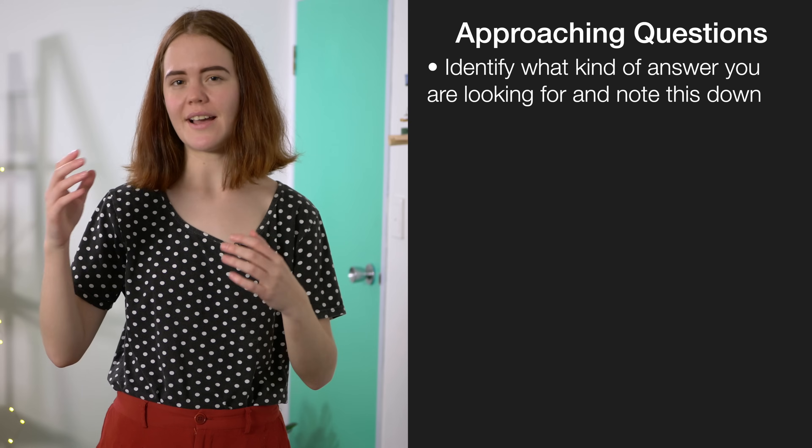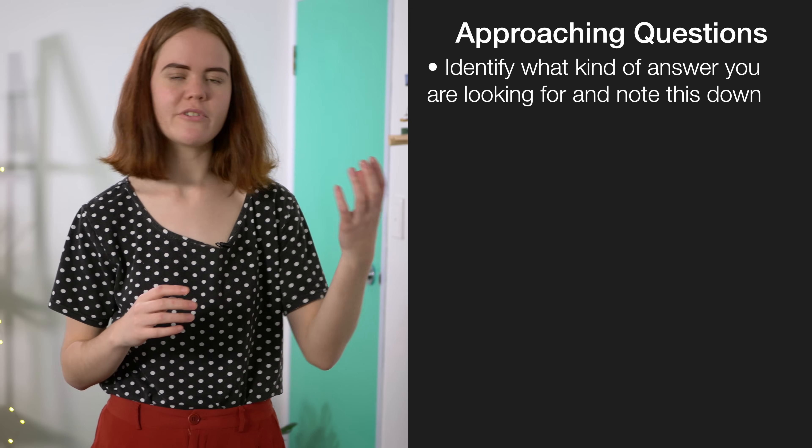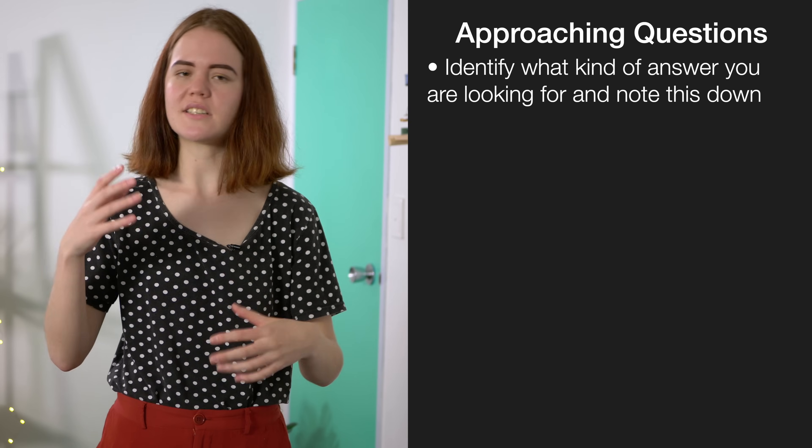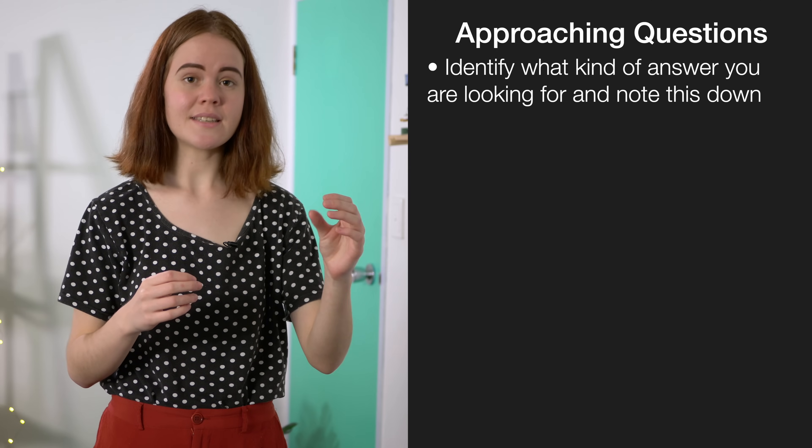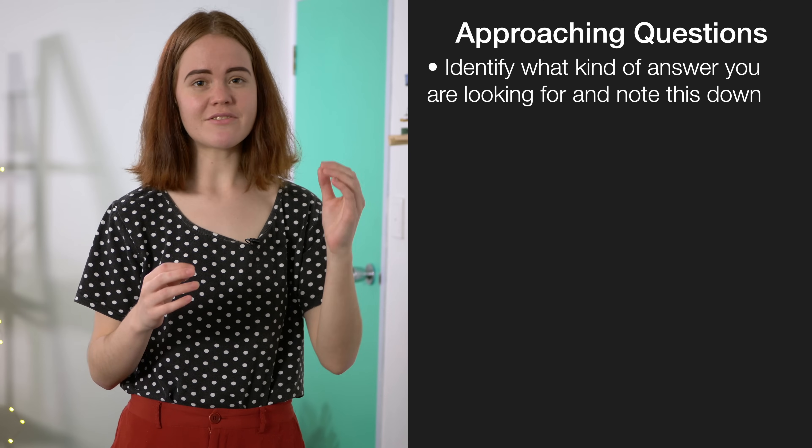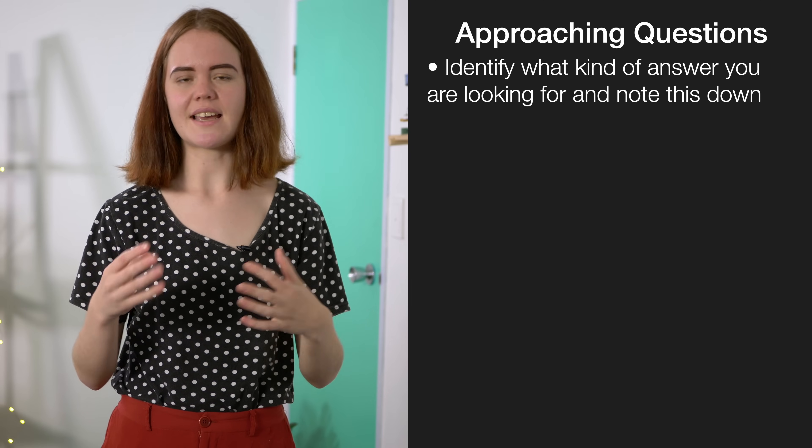When you're looking at a long word question, the first thing to do is to identify what kind of answer you're looking for. It might be something like a number of days or it might be a yes or no with a justification. Write this down at the bottom of your answer space immediately so that when you finish writing your answer, you'll know that you've given the marker exactly what they were looking for.